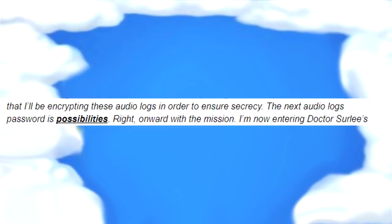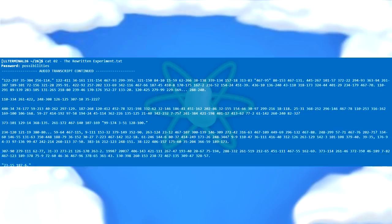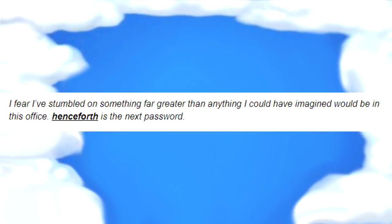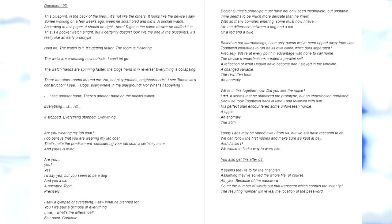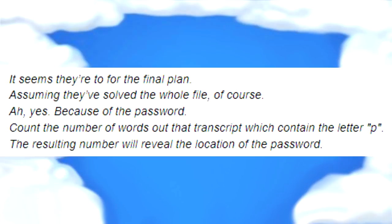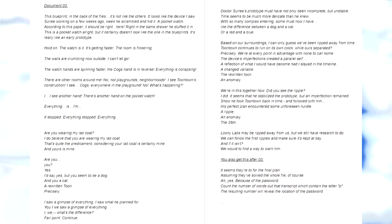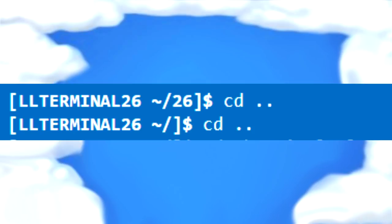With the password 'possibilities', go to the 02 text file — cat 02, enter the password — and the decrypting method is the same, giving you the next message. Your password here is 'henceforth'. Use cat on the 03 text file with the password and you get two messages. The footnote mentions that you need to count the number of words containing the letter P in the document — that reveals the location of the password. There are 36 words containing the letter P, so find the 36th word, and the password is 'watch'. Then cd dot dot back up to the root directory.